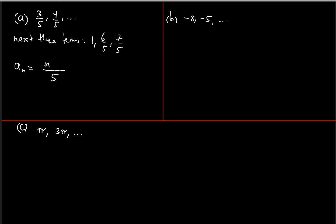Writing n here: when n equals one it gives one, but we need three, so we add two. When n equals two we need four, not two — adding two works. When n equals three the third term is five over five, and n plus two gives three plus two equals five. The denominator stays five, so the nth term formula is (n+2)/5.